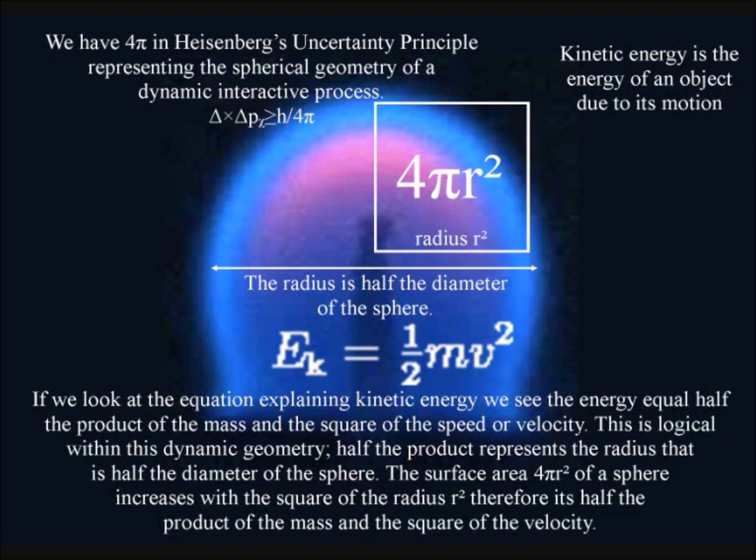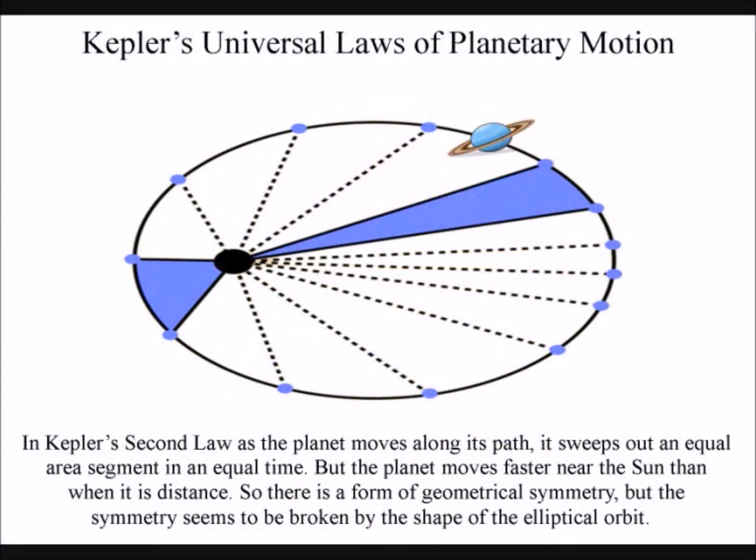The same mathematics representing a geometrical process can also be seen in Kepler's universal laws of planetary motion. In Kepler's second law, as the planet moves along its path, it sweeps out an equal area segment in an equal time. But the planet moves faster near the sun than when it is distant. So there is a form of geometrical symmetry, but the symmetry seems to be broken by the shape of the elliptical orbit.